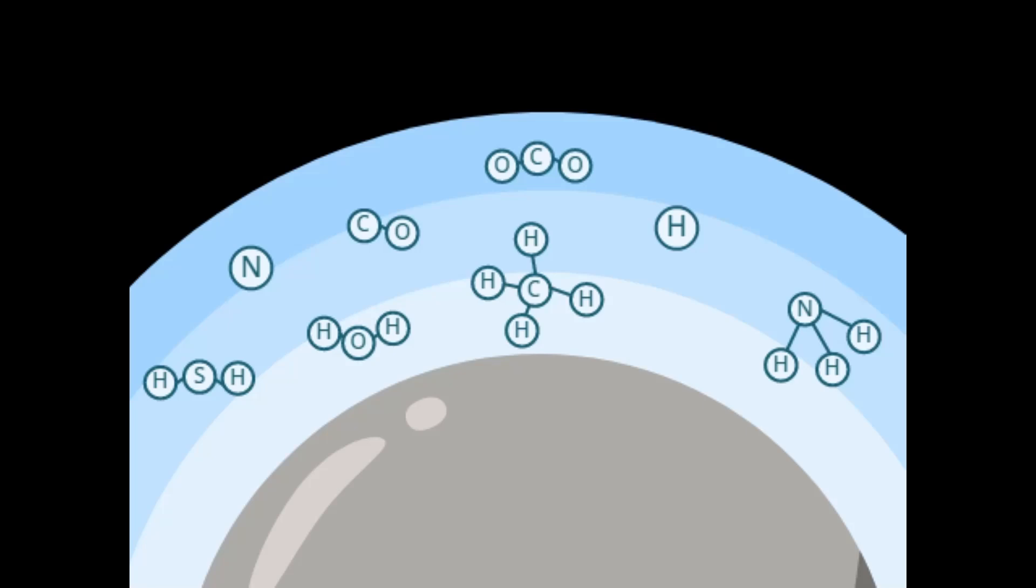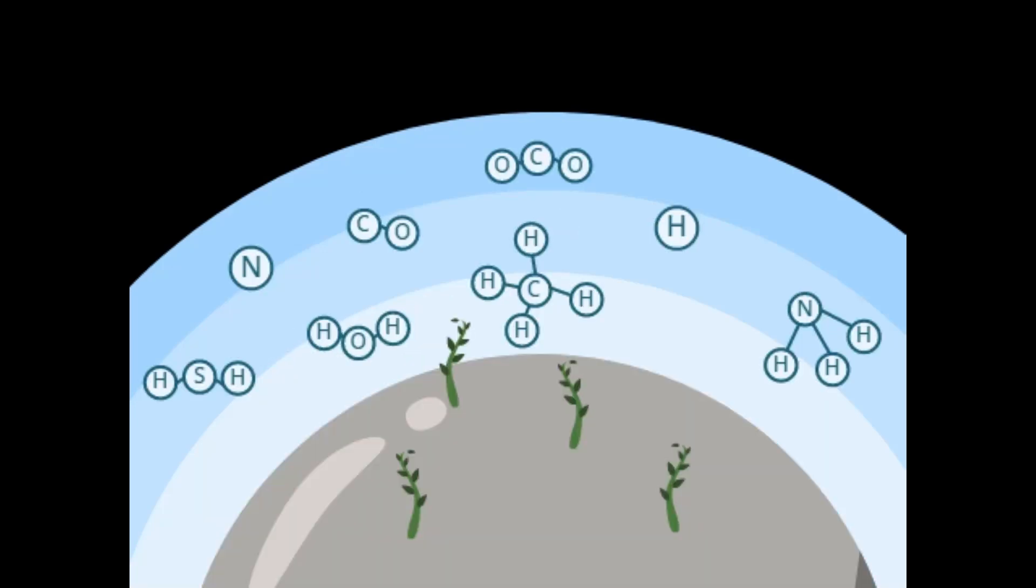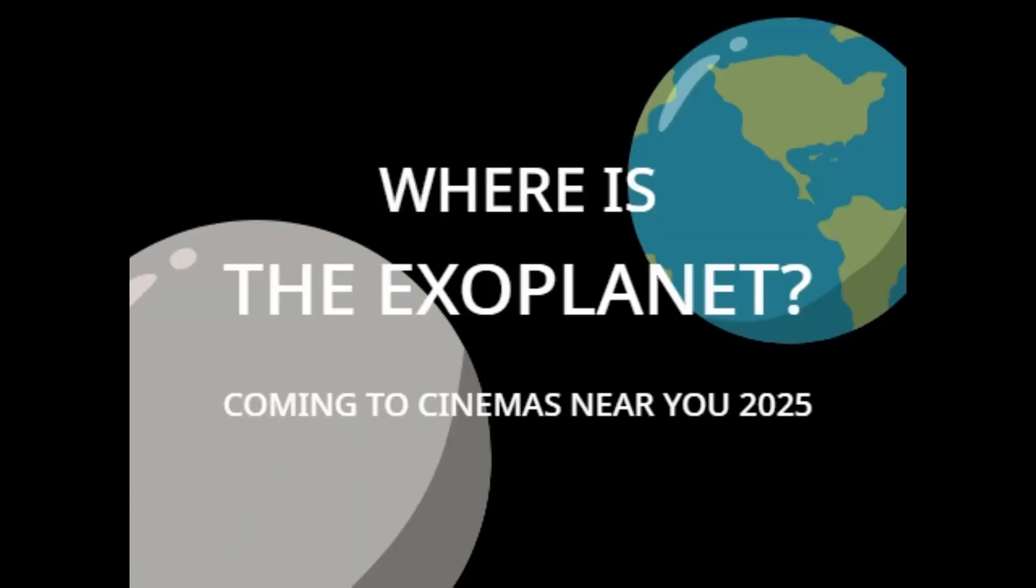If a planet with a similar atmosphere to early Earth is found, it could slowly be turned habitable via introduction of similar lifeforms, or even the more complex plants found on Earth today. But in order to bring plants to an exoplanet, first of all we have to find one.